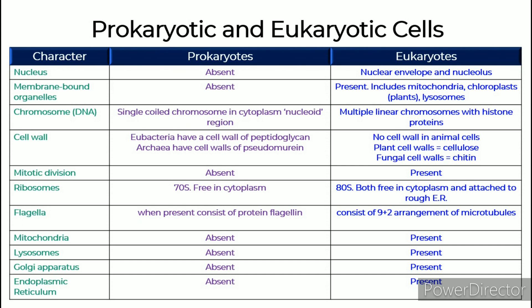Membrane-bound organelles: In prokaryotes, there are no membrane-bound organelles, but in eukaryotes they are present. These include mitochondria, chloroplasts in plants, and lysosomes.